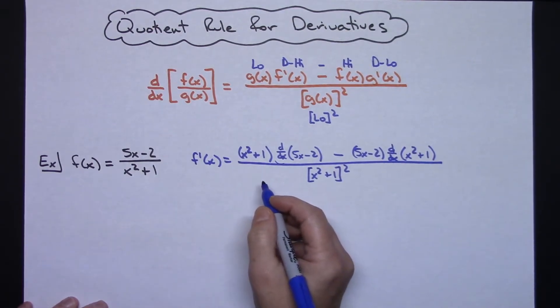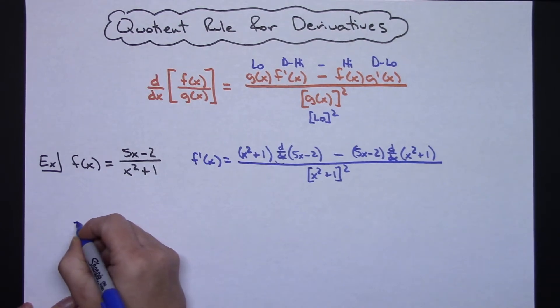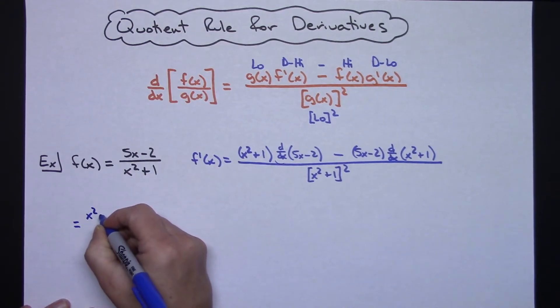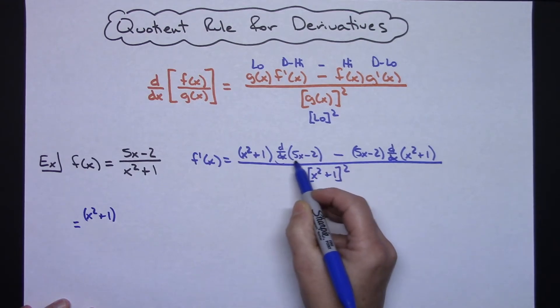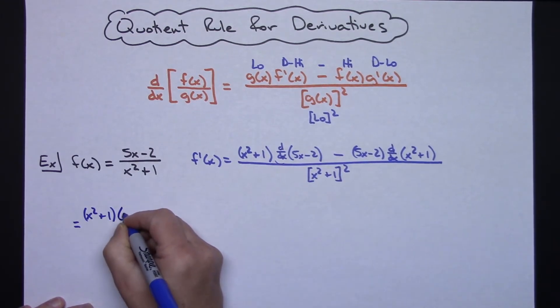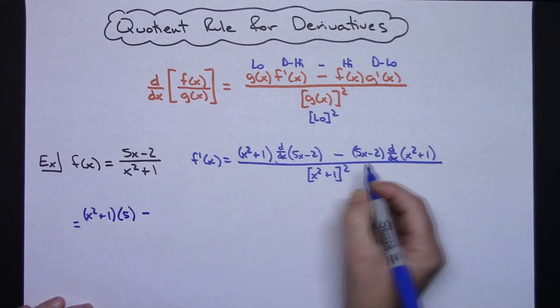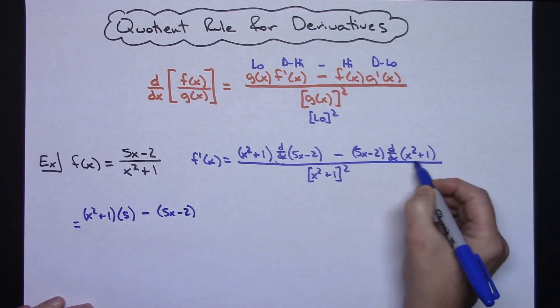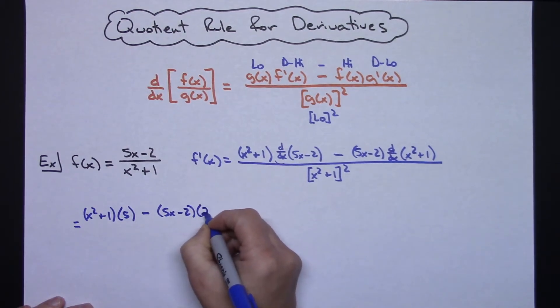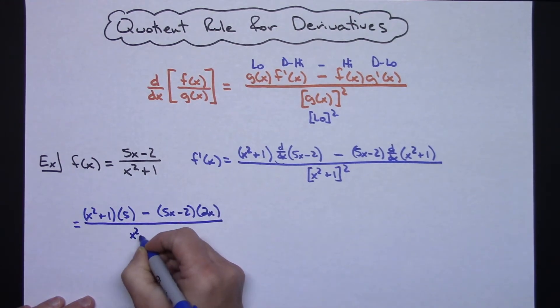Okay, now so let's come over here. Alright, so this is not going to change, so x² + 1. Alright, derivative of that expression right there, well derivative of 5x - 2 is just going to be a 5, minus (5x - 2), and then times that derivative of x² + 1, it's just going to be a 2x, and then all over (x² + 1), go ahead and make those curvy, squared.